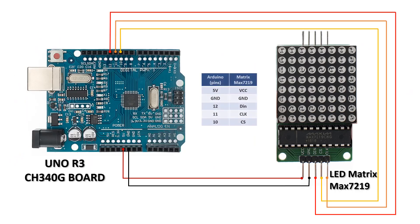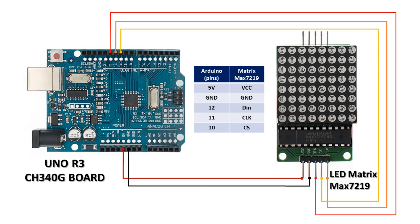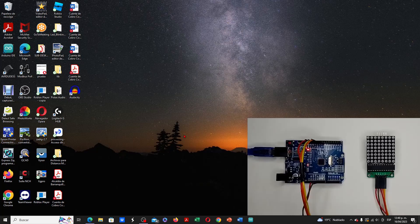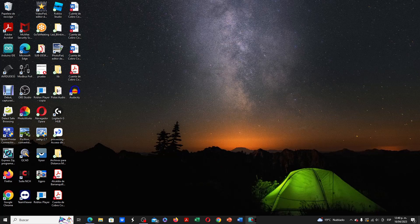This is the connection diagram that we will use between the LED matrix module and the Uno R3 board compatible with Arduino. We are going to make the connections indicated in the diagram and continue programming in the Arduino IDE software, with the matrix module connected to the Arduino board and the latter connected to the computer with the USB cable.